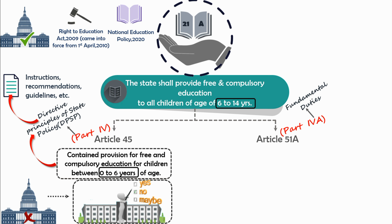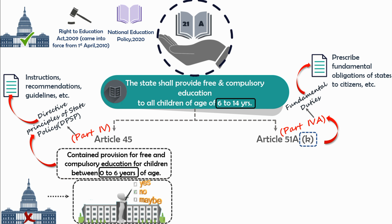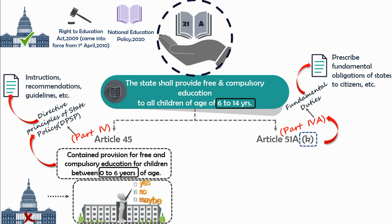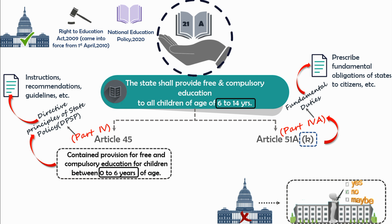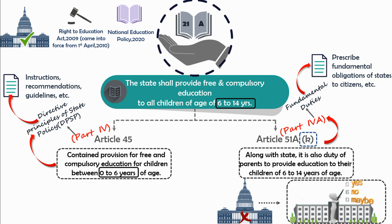The second change brought by the 86th Amendment Act related to Right to Education was the addition of Clause K in Article 51A. Article 51A is given in Part 4A, i.e. Fundamental Duties. Fundamental Duties, just like DPSP, prescribe the fundamental obligations of the state to its citizens, and just like DPSP, fundamental duties are also not enforceable by the court. While adding Clause K in Article 51A, it was mentioned that along with the state, it is also the duty of the parents to provide education to their children of 6 to 14 years of age.